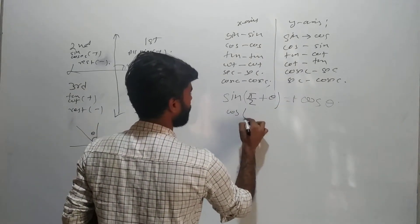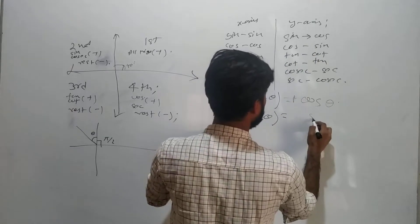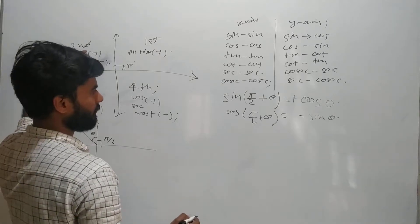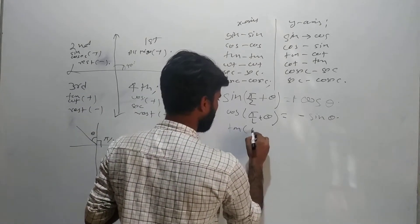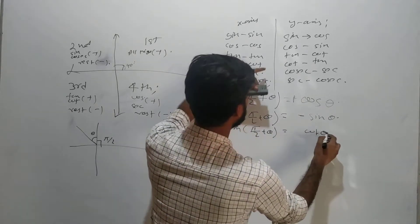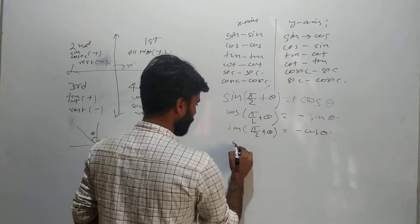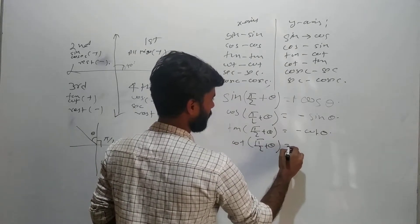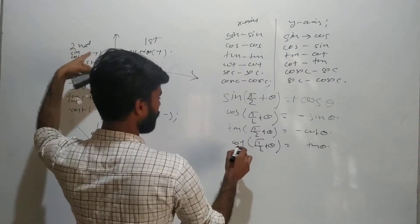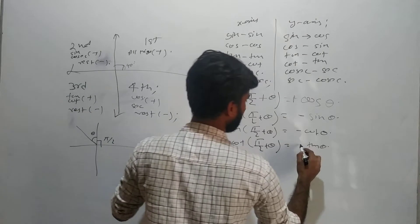For cos(π/2 + θ): cos will change into sine θ, and this will be negative because only sine and cosec are positive in the second quadrant. For tan(π/2 + θ): tan will change into cot θ, and this will be negative. For cot(π/2 + θ): cot will change into tan θ, and this will also be negative in the second quadrant.